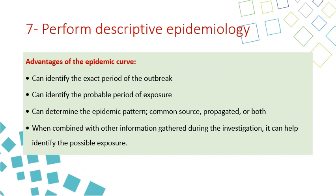Step number seven is to perform descriptive epidemiology. The advantages of the epidemic curve include: it can identify the exact period of the outbreak, identify the probable period of exposure, determine the epidemic pattern — common source, propagated, or both — and when combined with other information gathered during the investigation, it can help identify the possible exposure.